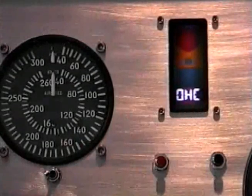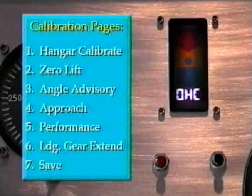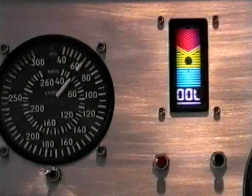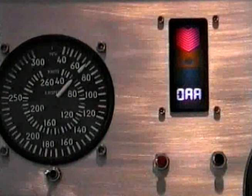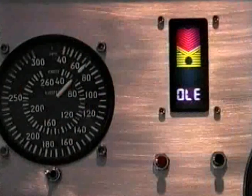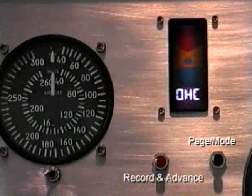HC on the bottom of the display is your verification that you are on the first page of the calibration mode. Within the calibration mode there are seven pages; each page has a unique code displayed at the bottom of the display. This is the hangar calibrate page, this is the zero lift page, this is the angle advisory page, this is the approach page, this is the performance page, this is the landing gear extend warning page, and this is the save page. We use the page or mode button to skip over pages without saving calibration data.